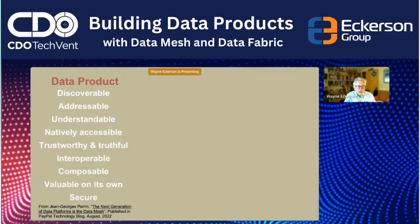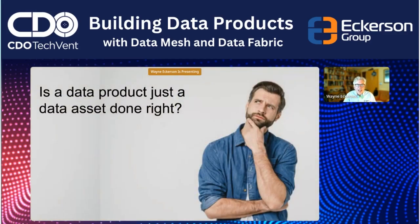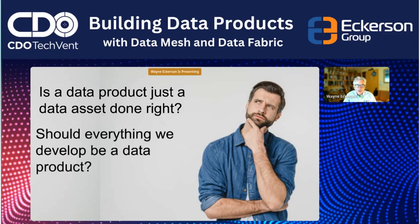I started reading a blog by Jean-Georges Perrin, who listed characteristics of a data product. They all look great to me, but I thought — shouldn't everything we build have these characteristics? Shouldn't every data asset exhibit these traits? So I'm still scratching my head thinking: is a data product just a data asset done right? Should everything we develop be a data product? Or is there a real difference between what we've always done and what we're now calling a data product?